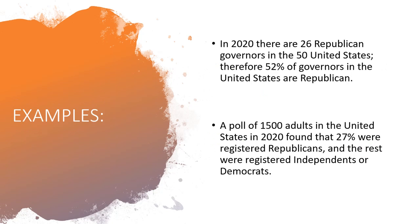Let's do some examples. In 2020 there are 26 Republican governors in the 50 United States, so 52 percent of the governors in the United States are Republican. Is this 52 percent a statistic or a parameter? A good approach is to think about the word 'all.' Does that 52 percent represent all of the governors in the United States? They said 26 Republican governors out of 50 states, and we only have 50 states — so that is all of our states. This is a population measurement, which means that 52 percent must be a parameter.